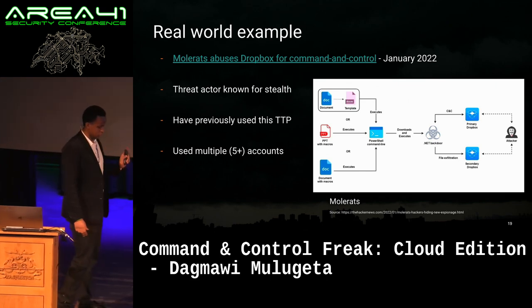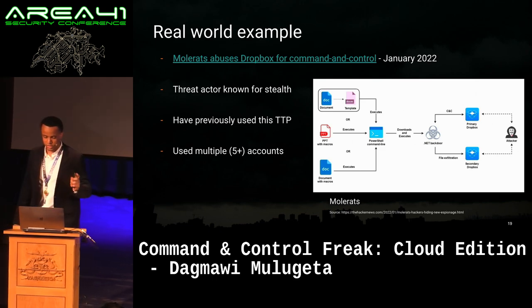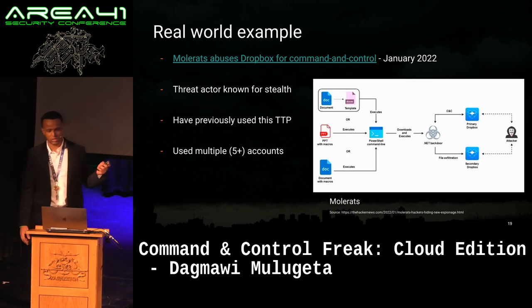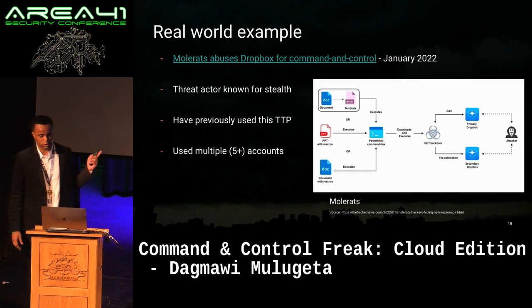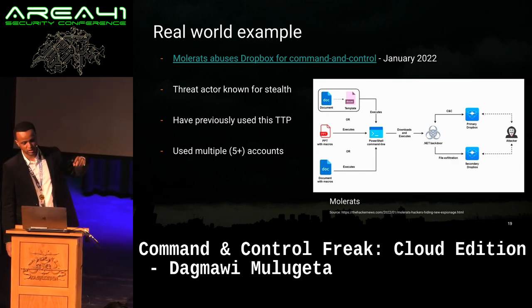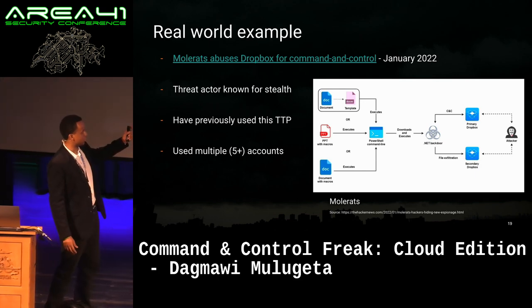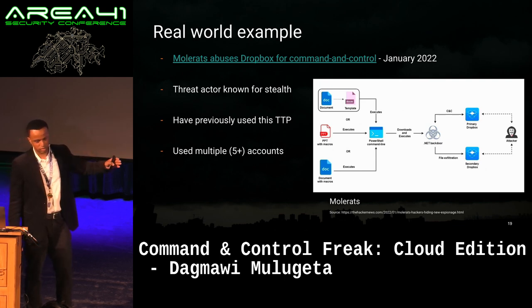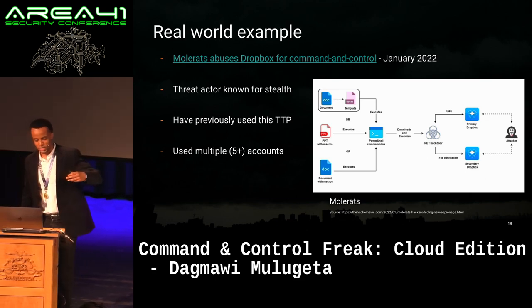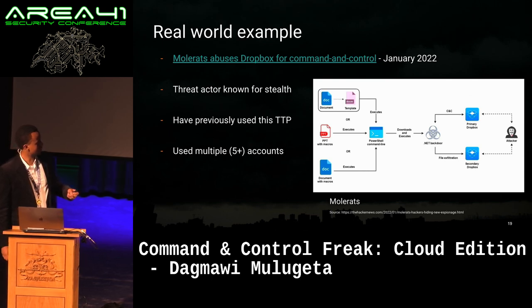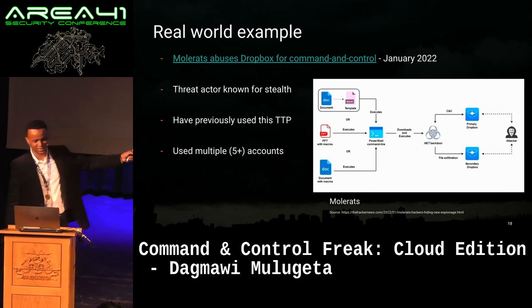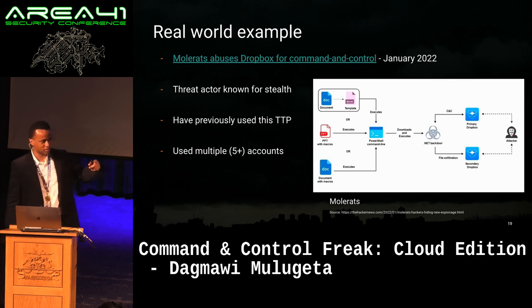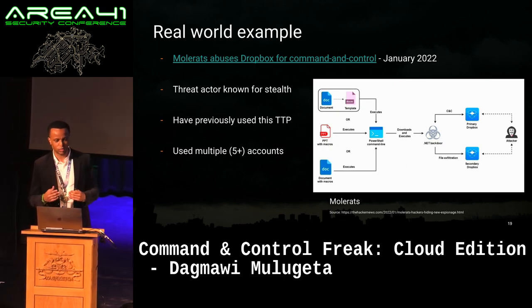Let's go over one real world example of abuse. The threat actor Moratz was abusing Dropbox earlier this year — a threat actor known for being stealthy who has used this tactic before. What was interesting in this instance is they were using multiple Dropbox instances with responsibility segregated among them. One Dropbox instance was for uploading commands, another for downloading, another for file exfiltration. A malicious Office document gets downloaded, executes some PowerShell command, which downloads and executes another backdoor that communicates back to the attacker via these Dropbox instances — making the operation more robust so that if one instance gets compromised, they have others to reach out to the compromised devices.